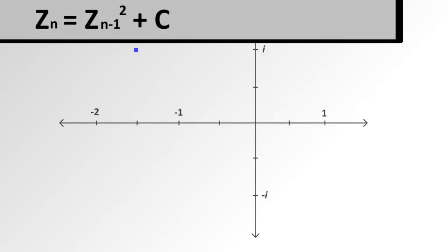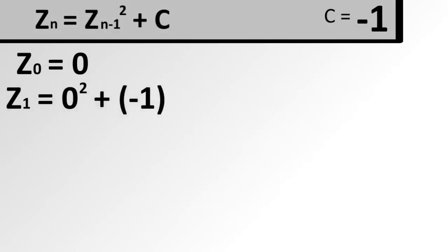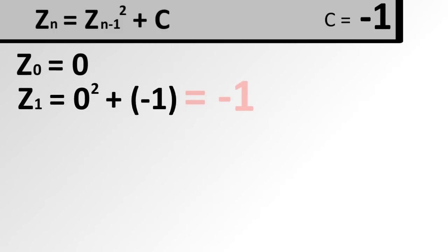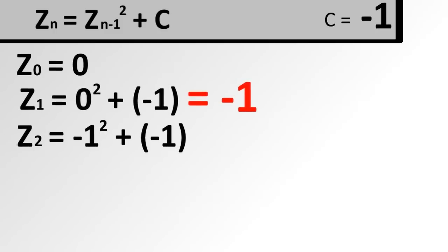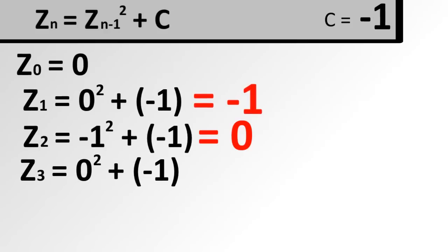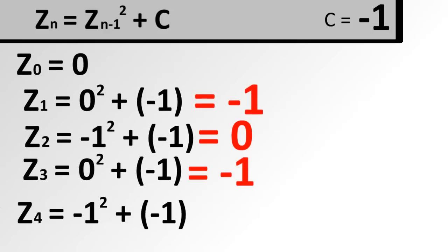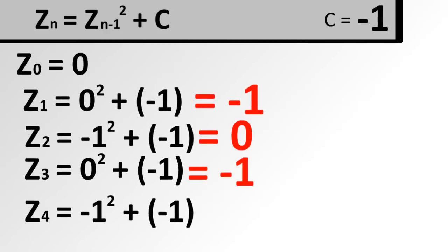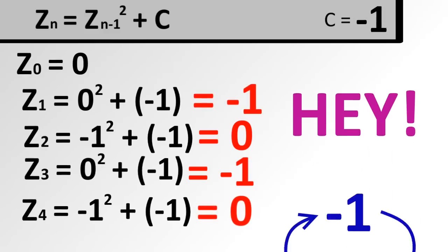Let's try the equation with the number negative 1. Z sub 1 equals 0 squared minus 1. Z sub 2 equals negative 1 squared minus 1. Z sub 3 equals 0 squared minus 1. Z sub 4 equals negative 1 squared minus... Hey, wait a minute. We're going in a loop.